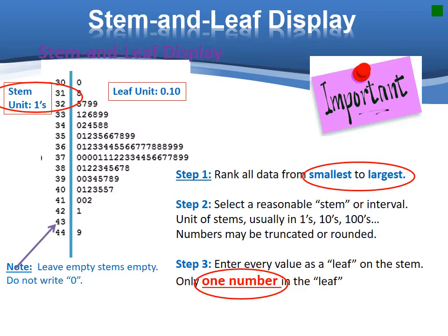Another graphical representation of the data is stem and leaf display. In this display, the left side is the stem and the right side is the leaf. Step 1, rank all the data from smallest to largest. Step 2, select a reasonable stem for the units of stems, usually in 1s, 10s, 100s. You should define the unit of the stems. For example, if you define the stem unit as 1s, then 30 here will be 30.